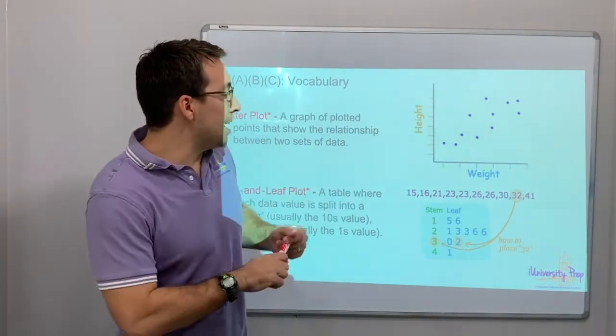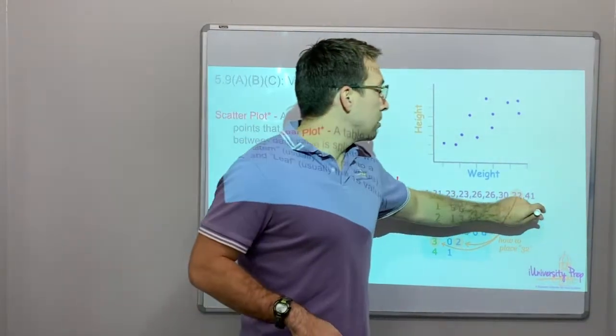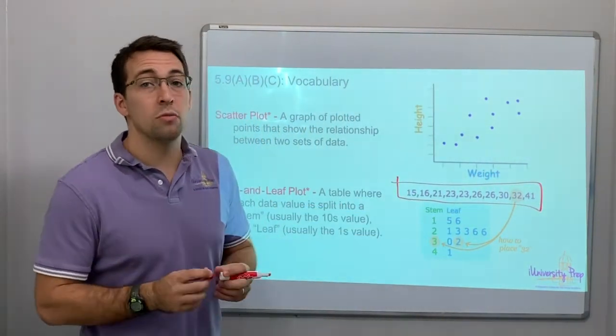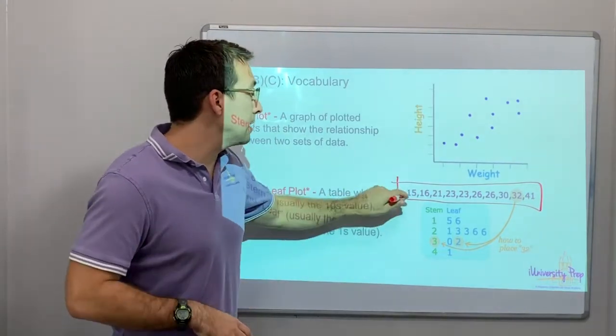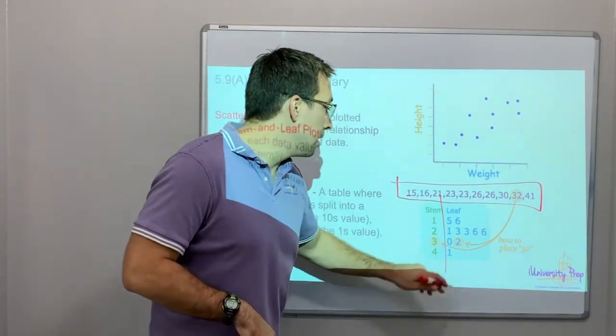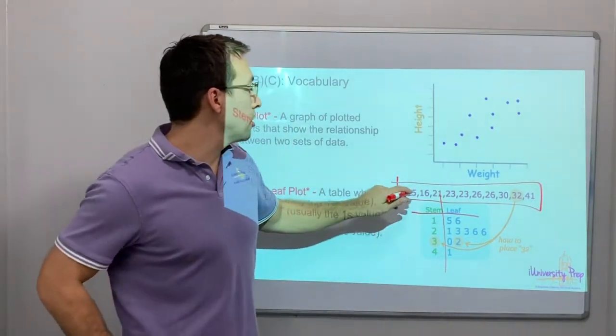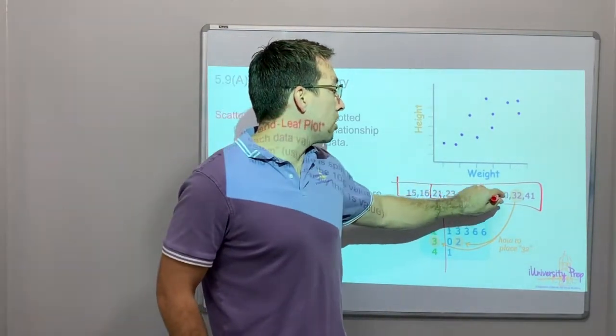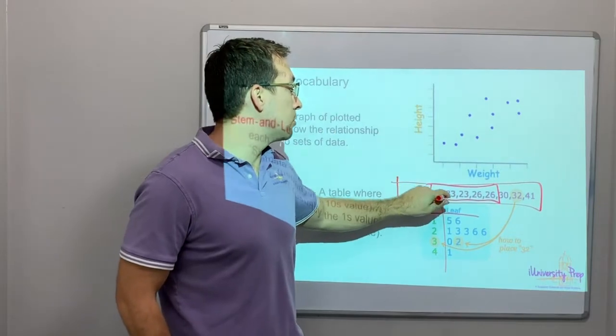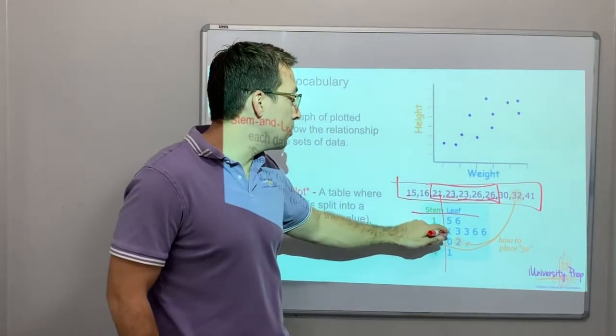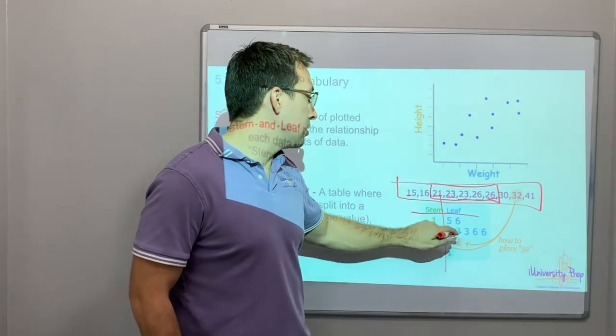It will take a set of data, a set of numbers, and then it will break them up. Generally, it's going to be where the tens place is in the stem and then the leaf is the ones place. So notice we have five numbers that start with 2: 21, 23, 23, 26, 26. And notice, 21, 23, 23, 26, 26.